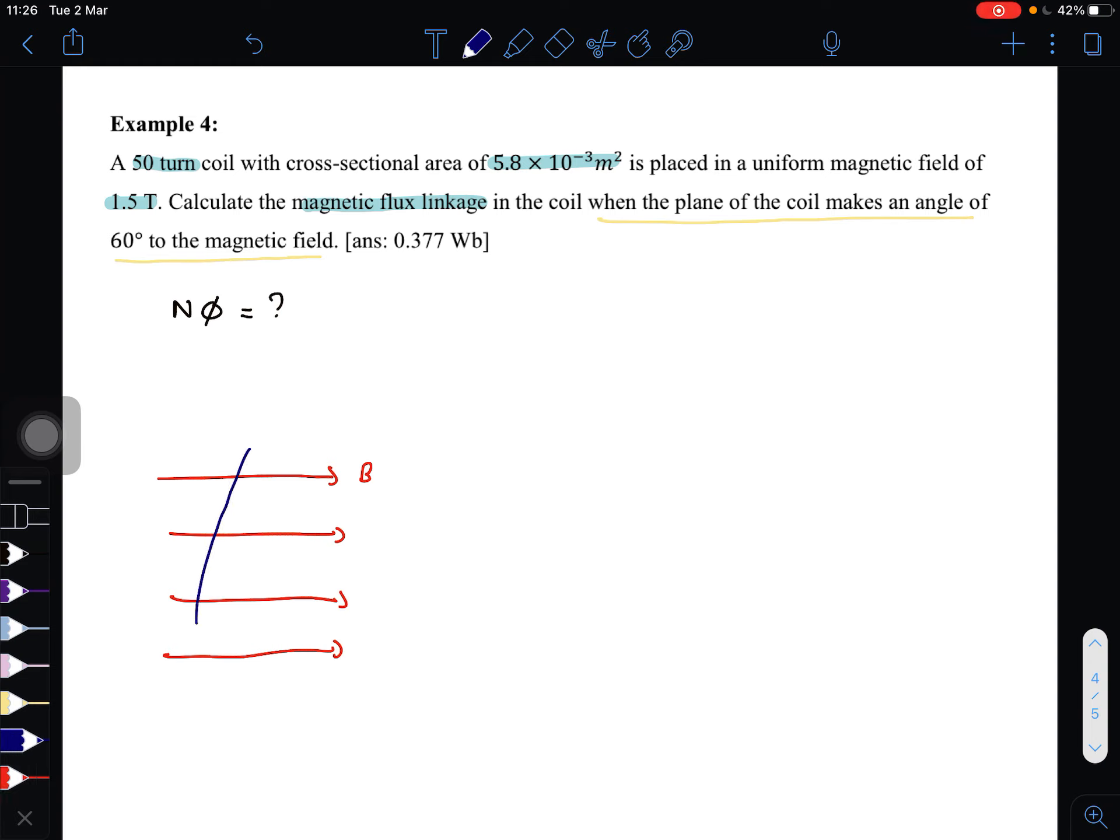So this is the plane. We draw the plane like this. It can be round, doesn't matter, same thing. As long as the angle between the plane and B is 60°.